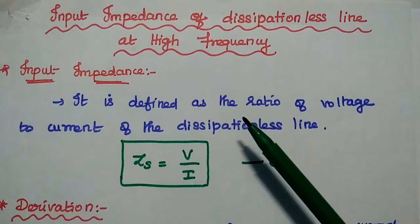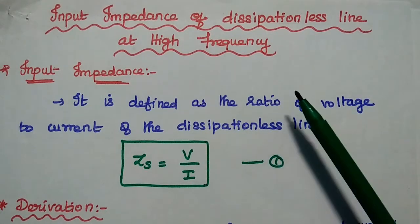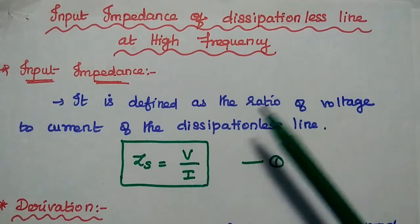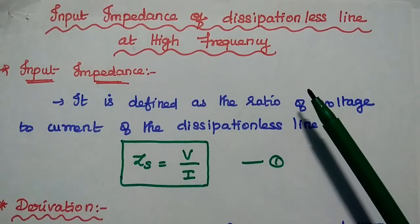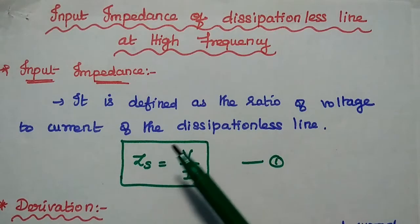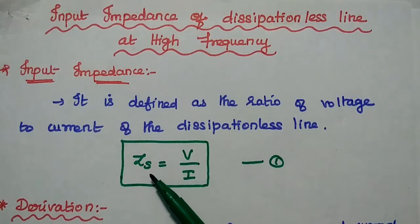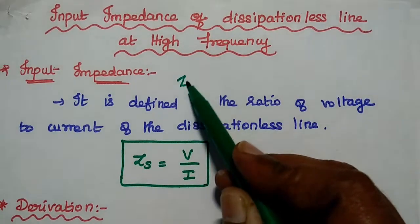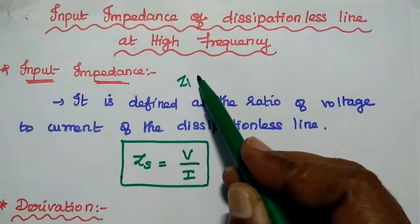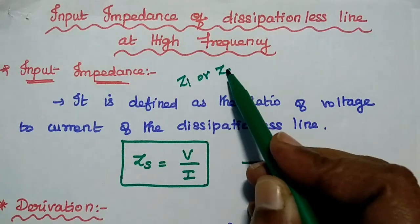In this video lecture, we are going to study about the input impedance of a dissipation-less line at high frequency. Input impedance is also called sending end impedance. So here, input impedance is nothing but Zi, that can also be represented as Zs.